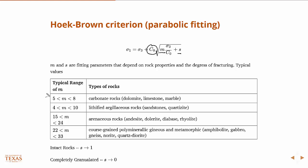And here's some typical values. I'm not sure why these didn't show up. It should be like this. So, there's some typical values for M for different types of rocks.